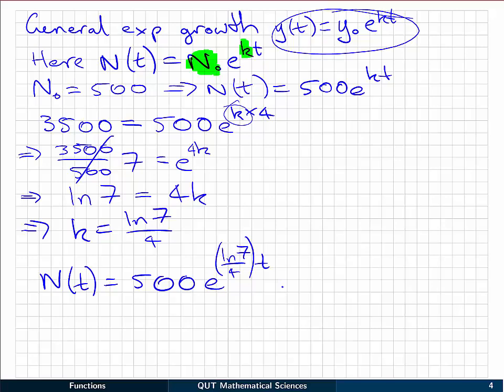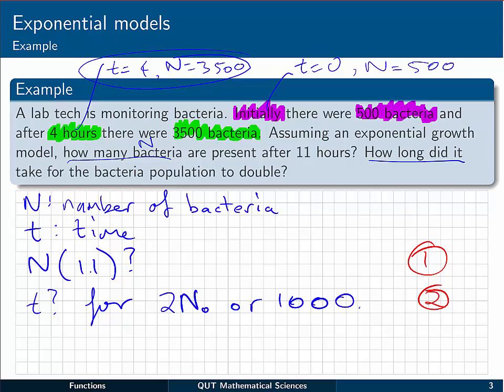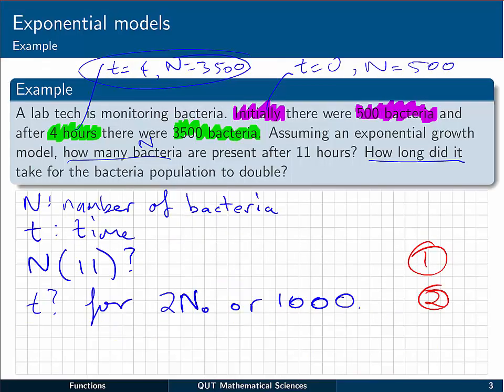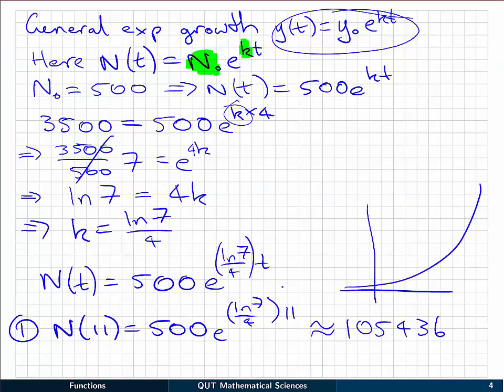Now remembering our first question was, how many bacteria are there at 11 hours later? So t equals 11. So we can easily answer that one now. N at 11 is going to be 500e^((ln 7/4)×11). Now if you jump away for a minute and plug that into your calculators, you should find that you get approximately 105,436. That seems like a lot given that we started with 500, and after 4 hours we had only 3500, but remember this is an exponential growth model. It looks something like this. So it's reasonable that the values would grow very quickly as we move further along in time.